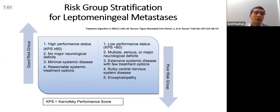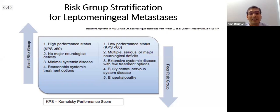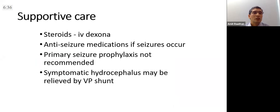Leptomeningeal patients are stratified into two groups. Good-risk patients have good performance status, non-severe neurological deficits, minimal systemic disease, and most importantly reasonable systemic treatment options available. Poor-risk patients have poor performance status, severe neurological deficits, severe or bulky systemic disease, encephalopathy, and no treatment options — these patients will do very poorly.